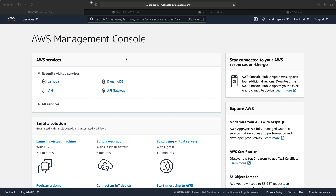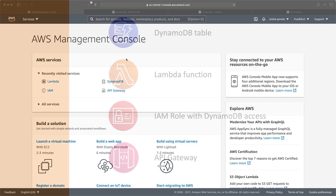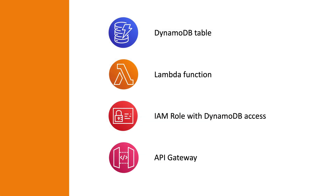So let's do that. For this, we need a few resources. We need a DynamoDB table, a Lambda function, an IAM role with some DynamoDB policies, and lastly, we need an API Gateway.